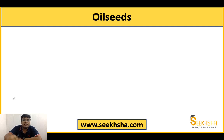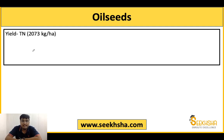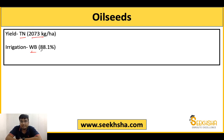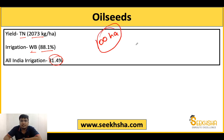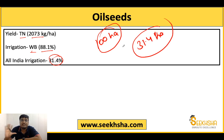For oil seeds yield, Tamil Nadu has the highest at 2073 kg per hectare. For irrigation, West Bengal has the most at 88.1%. At the All India level, the irrigation potential developed for oil seeds is 31.4%, meaning that out of every 100 hectares where oil seeds are grown, only 31.4 hectares have irrigation facilities available — the rest is entirely rain-fed.